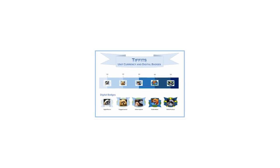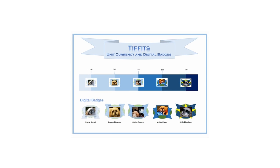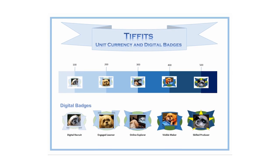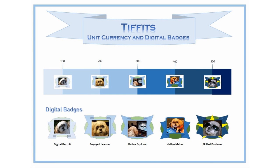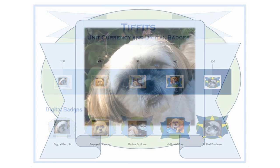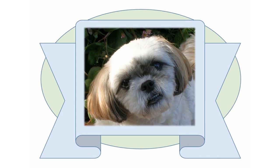Students can accrue more Tiffits by being active online, and the whole idea is that you can level up. I've got digital badges that display Tiffany's cute little face in various ways. You start off as a digital recruit and you can become a skilled prosumer. Students can earn Tiffits through tweets, blogs, video, or a great discussion post within the CloudDeakin forums — all that kind of stuff.